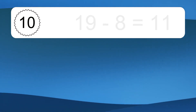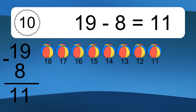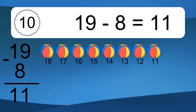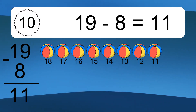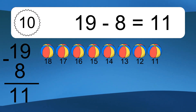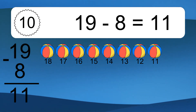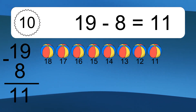19 minus 8 equals what? 19 minus 8 equals 11. Let's count it: 18, 17, 16, 15, 14, 13, 12, 11.